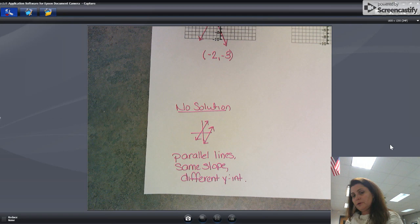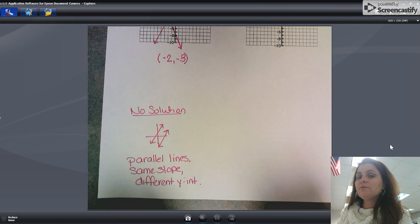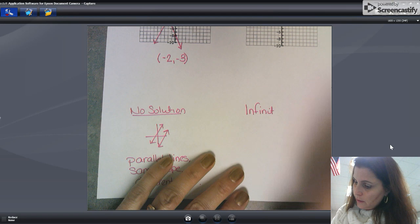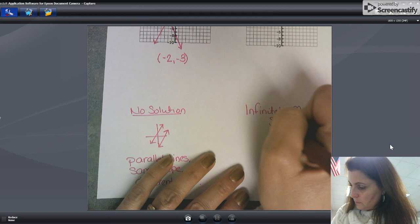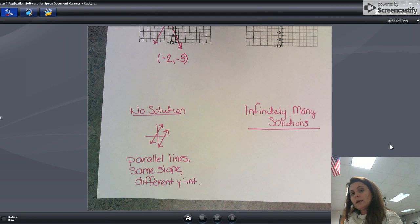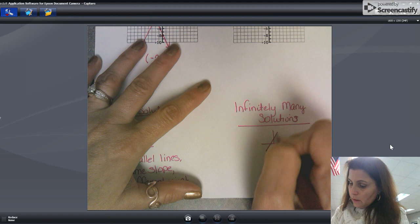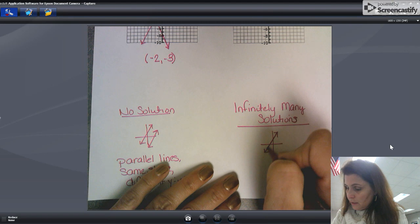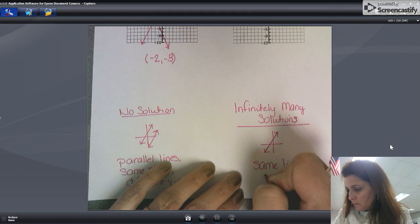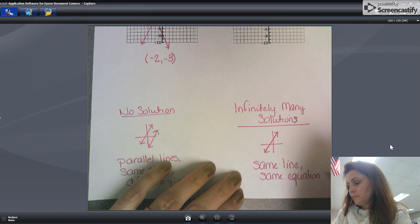Another interesting thing that could happen is there's infinitely many solutions. Now, graphically speaking, what will that look like? That's when both of your equations graph to the same line. It'll be the same line, or they'll have the same equation. And if that happens, that's infinitely many solutions.